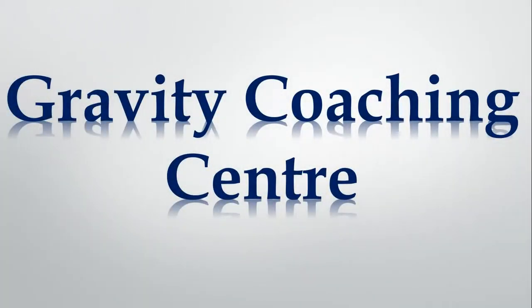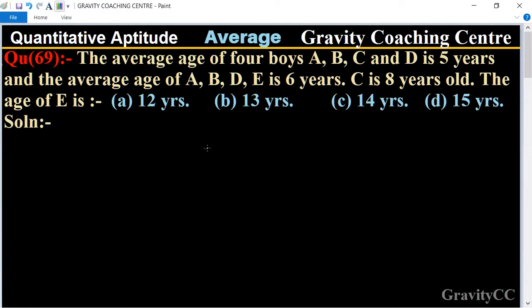Welcome to our channel Gravity Coaching Center, quantitative aptitude chapter average, question number 69. The average age of four boys A, B, C and D is five years and the average age of A, B, D, E is six years. C is eight years old. The age of E is what? So in this question...